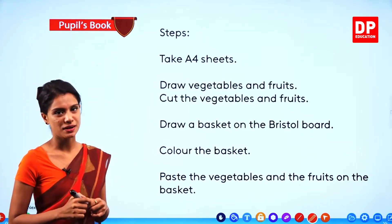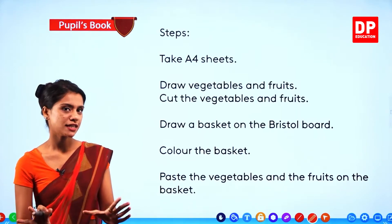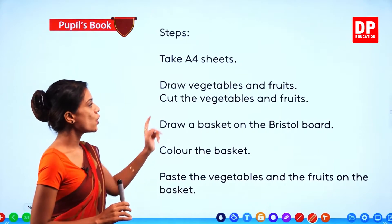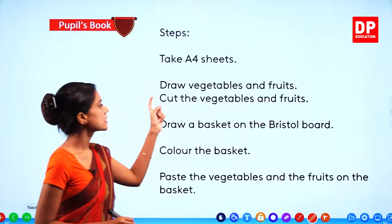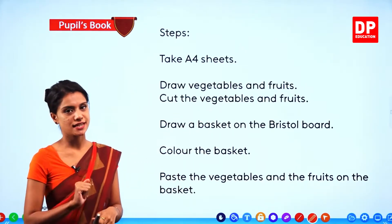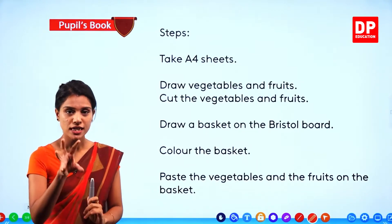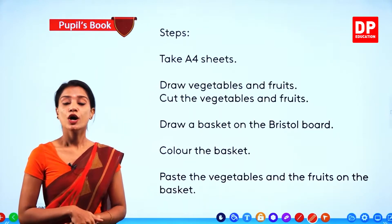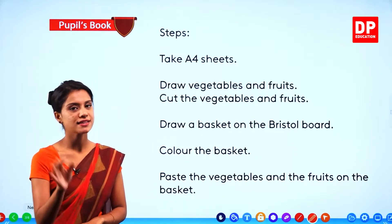Steps. Take A4 sheets. Draw vegetables and fruits. Cut the vegetables and fruits. In the colored A4 sheets, draw the fruits and vegetables — fruits and vegetables — and draw them.